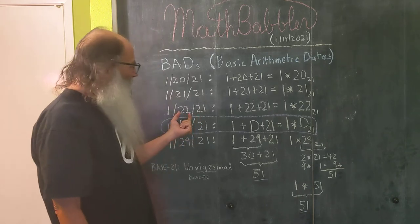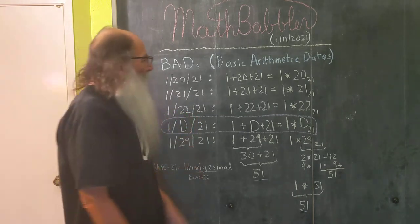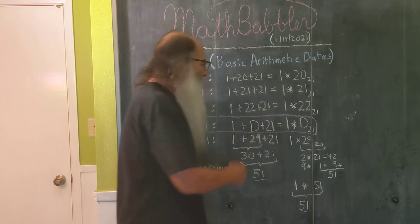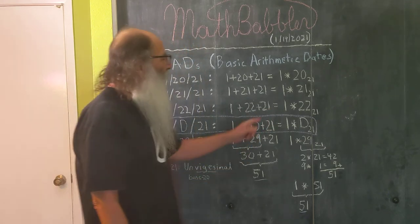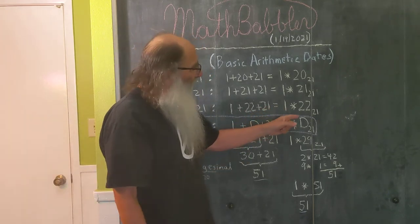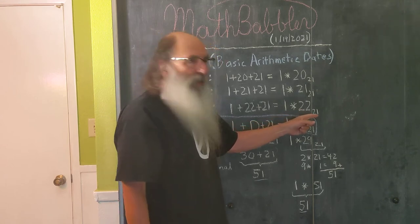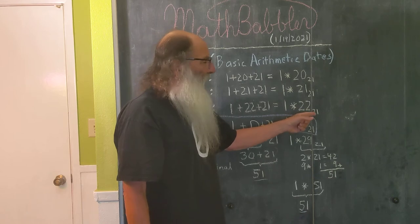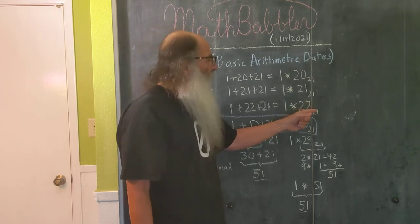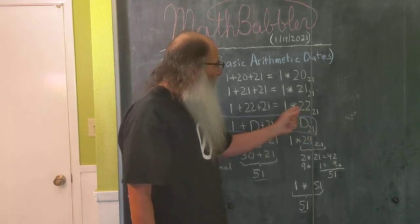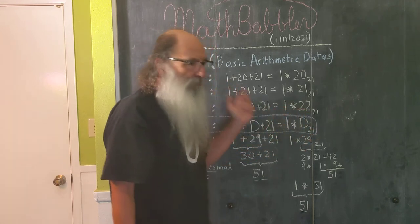Move on to the 22nd. 1 plus 22 plus 21 is 44. Move over to the right side. Well if we take 22 in base 21, we now have two units of 21, which is 42, plus the two ones would give us 44. 44 times 1 is 44.